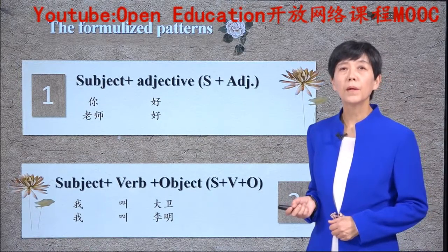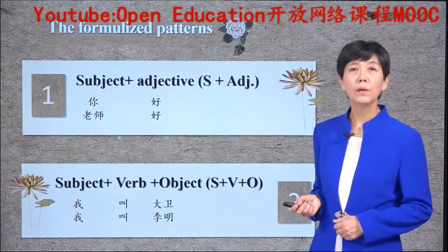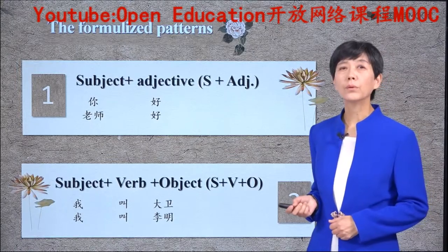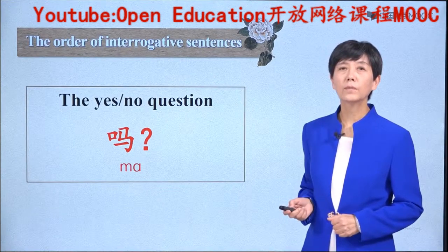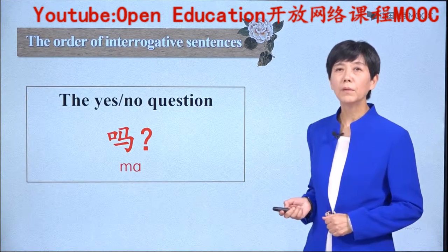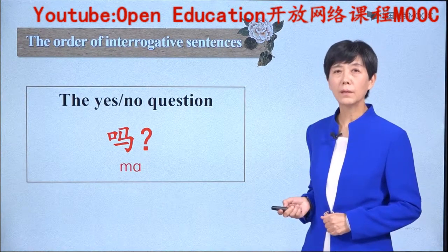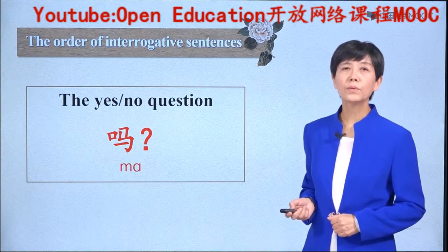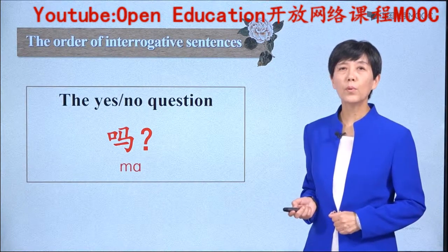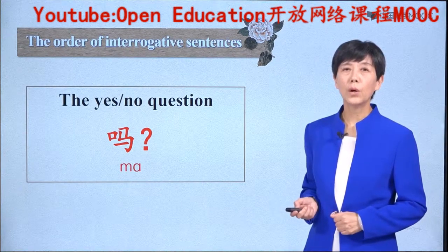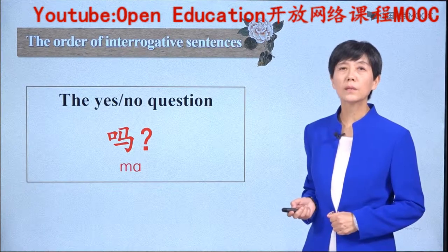But the first pattern may be different from some languages, including English. Please be careful in your future study. You have now learned the order of Chinese sentences in a confirmative way. Now let's see how to raise a question in Chinese. The yes-no question is used very often in Chinese, and the most important word you should know is 吗, which is the question word used to raise a yes-no question.